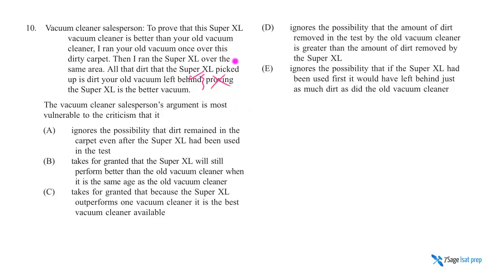A says ignores the possibility that dirt remained in the carpet even after. Yeah sure, but that's not why this argument's weak. A is saying your old carpet, rather vacuum, ran it once through and Super XL ran it once through. There might still be dirt remaining, that's true, but that's got nothing to do with this argument. The argument does ignore this possibility, but that's not why this argument is bad.